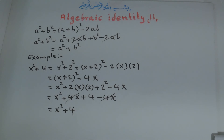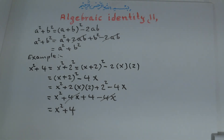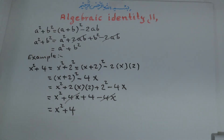So we prove that a to the power of 2 plus b to the power of 2 is equal to a plus b all to the power of 2 minus 2ab.